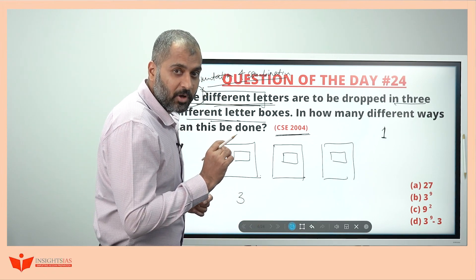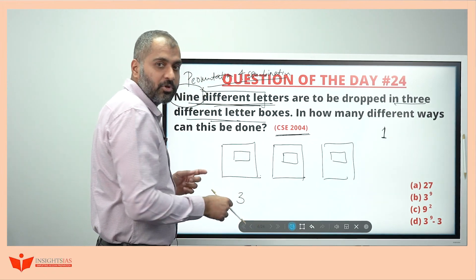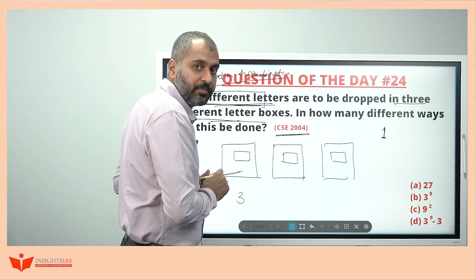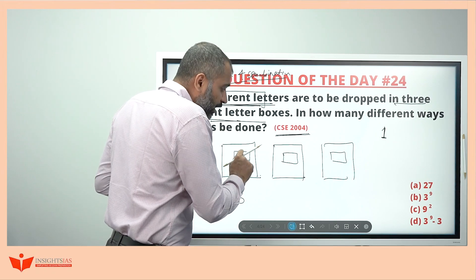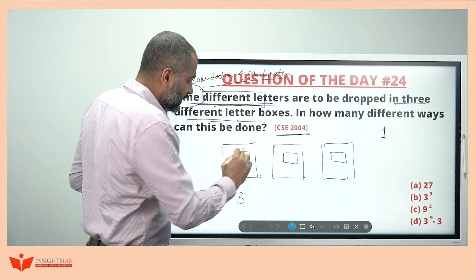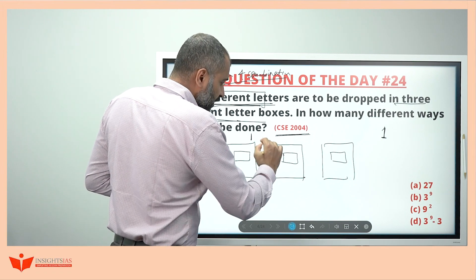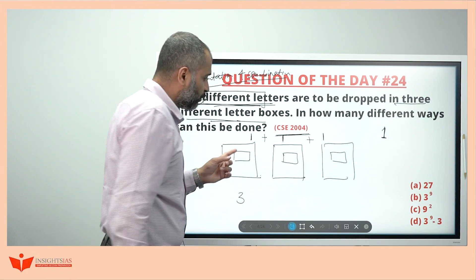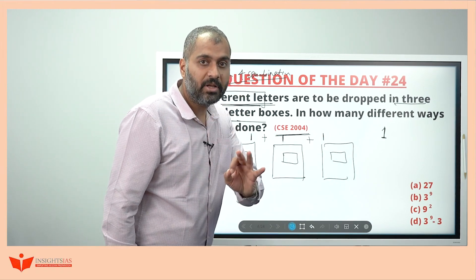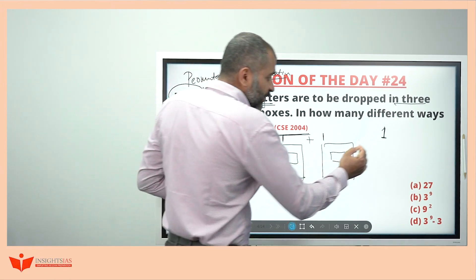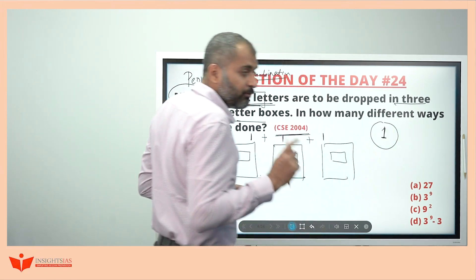This is or, not and. Because once you post here, you cannot post the same letter into another box. It is already posted here. Either you can post here, or else here, or else here. Or is always addition. See, you have one choice here, or else means addition. You have one choice here, or else means 1 plus 1 plus 1. You have three choices. Three different ways you can post the first letter.